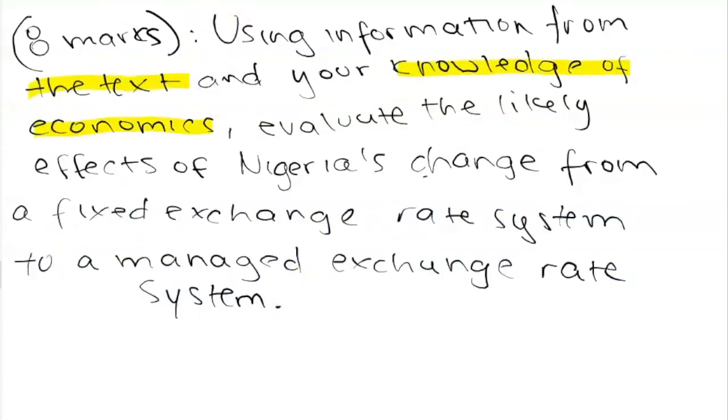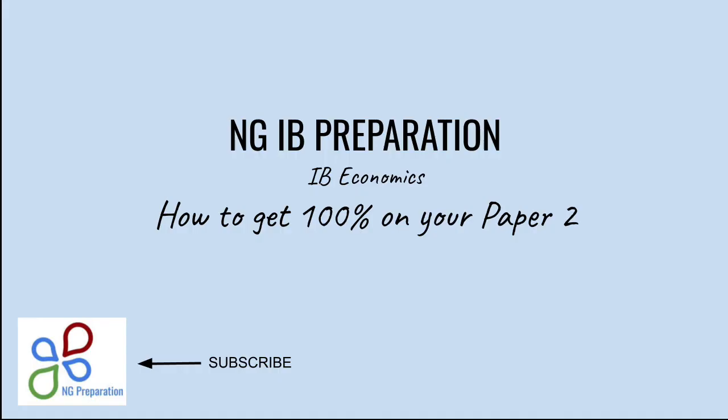After taking 10 or so minutes to brainstorm these possible pros and cons, you can divide your essay into the first paragraph being pros, the second paragraph being cons, making sure to include at least two or three diagrams and in the introduction to define the key terms. Define a fixed exchange rate system and a managed exchange rate system and make sure in your conclusion to make a decision, which is better for the economy. Do not stay impartial. I hope these tips were helpful and please let me know if there's anything else you'd like me to go over, and if maybe I should make a list of necessary definitions that you need to learn for your paper twos. Leave comments below and please subscribe to keep learning.